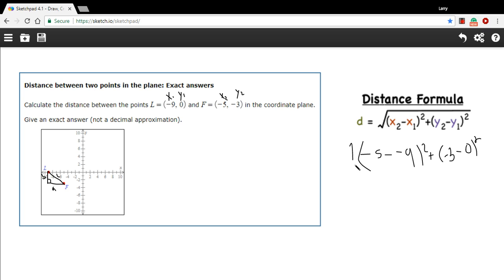And then we'll take the square root of all of that. So let's calculate what's inside these parentheses. A negative 5 minus a negative 9 is like negative 5 plus 9. That's 4. And then if we square it, we're going to get 16. A negative 3 minus 0 is just negative 3. If we square that, we get 9.